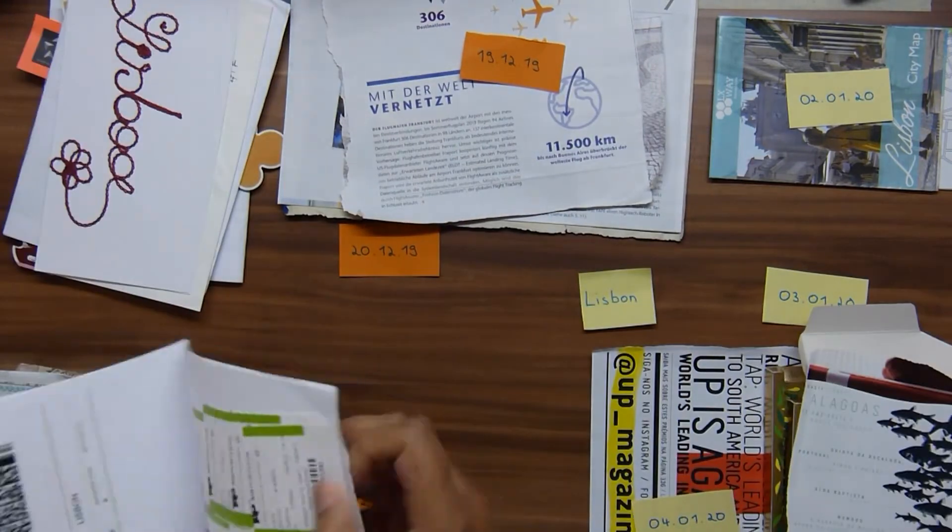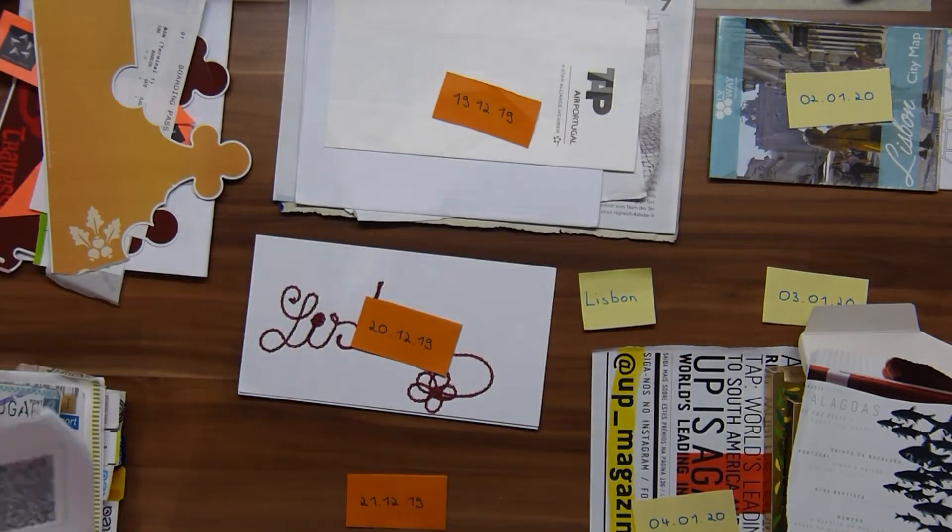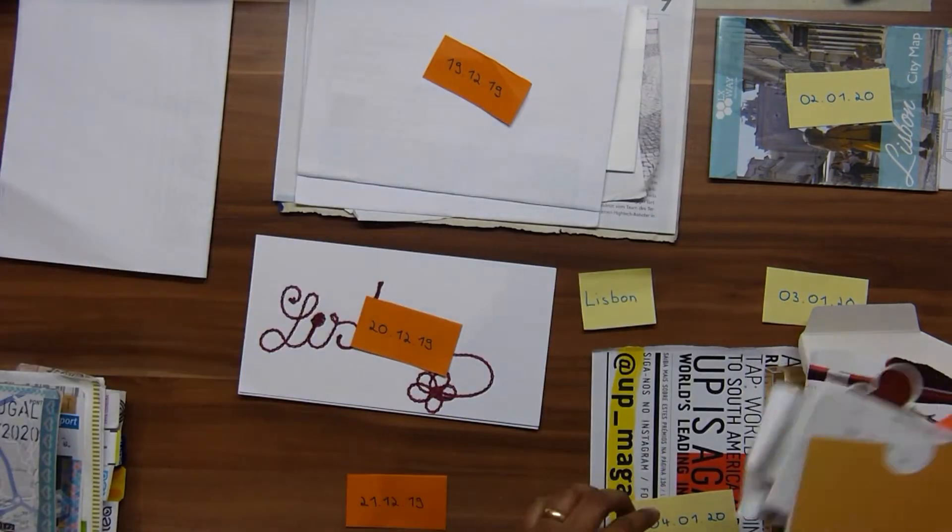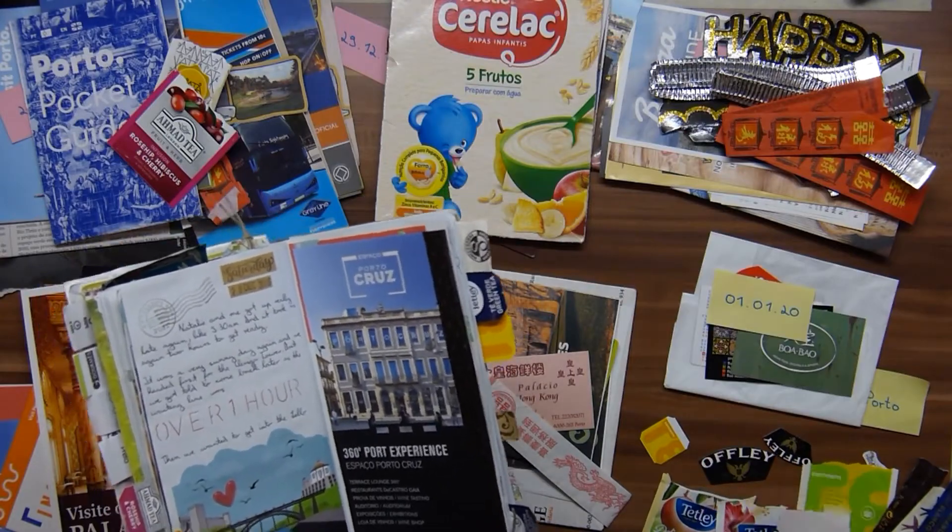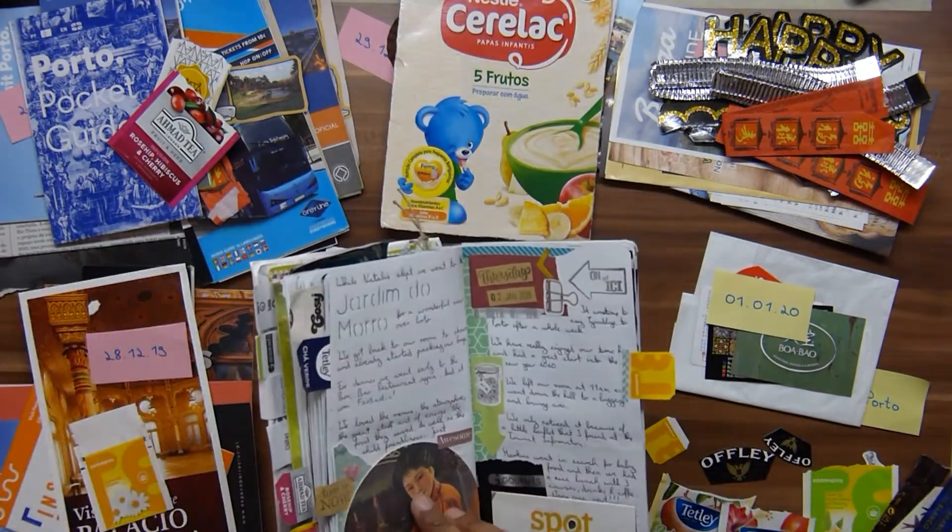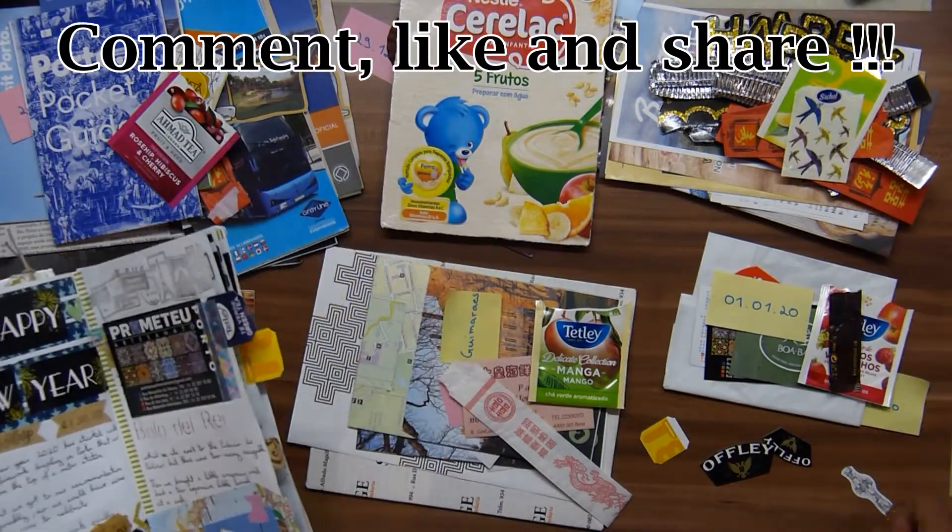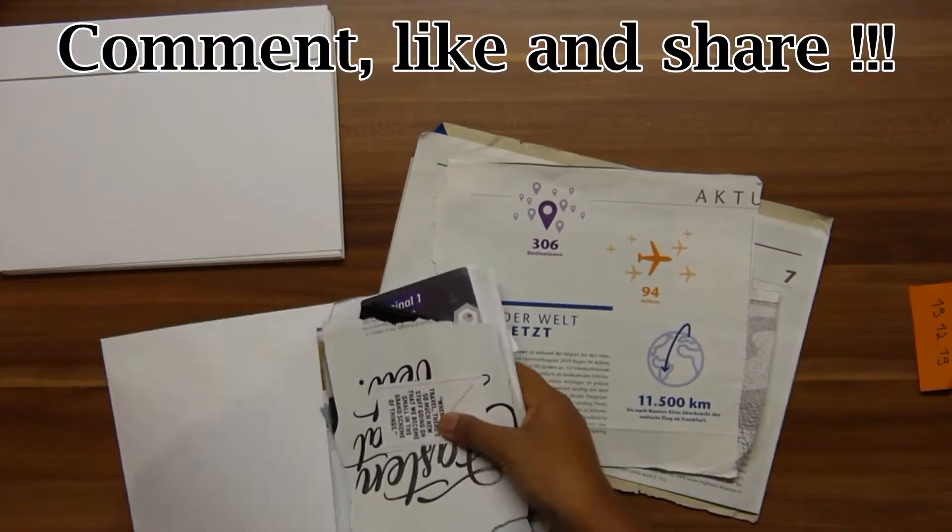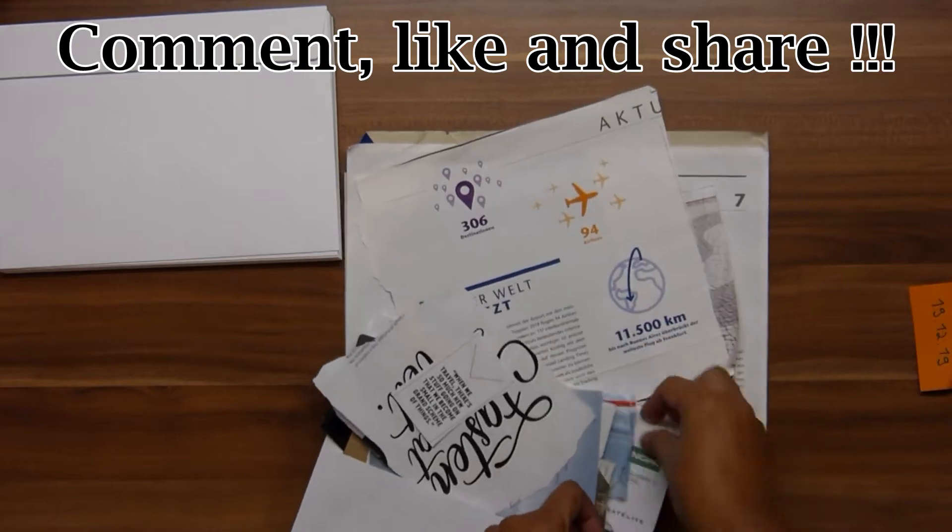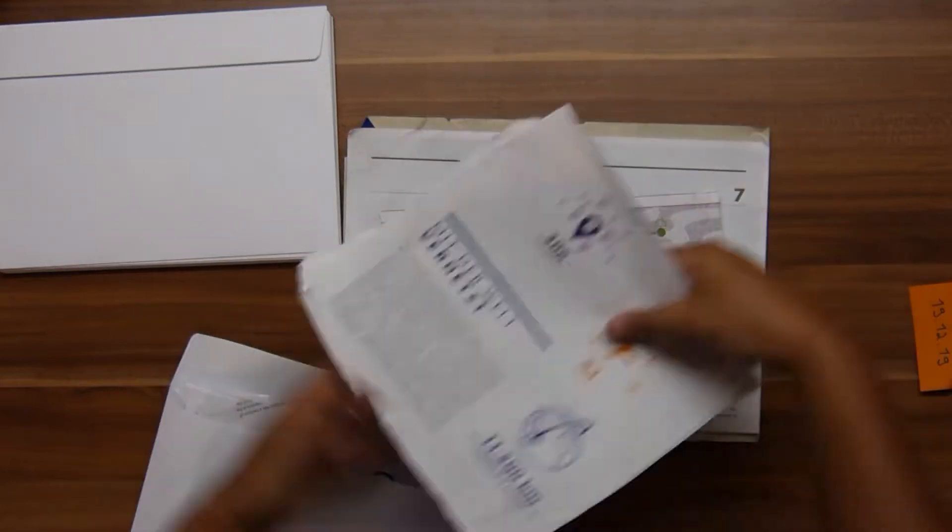Everything goes into each of these days, and this is where the travel journal is helping me a lot in determining when we drank which port wine or when I had this tea. Everything is sorted into these 17 days we went for, and I put everything of these days into an envelope.